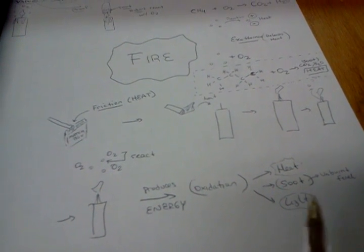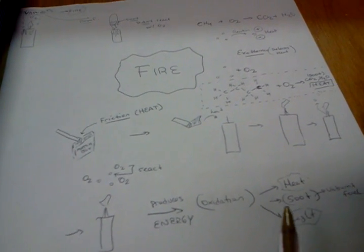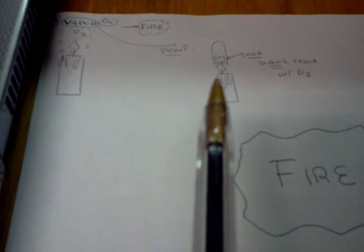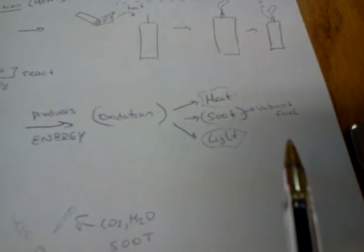and the heat and light is what makes up that flame. And you also have soot, which can be formed. Let's say you take a tube and you put it over your flame. You get this soot. What is that soot? That's all of the unburnt fuel.